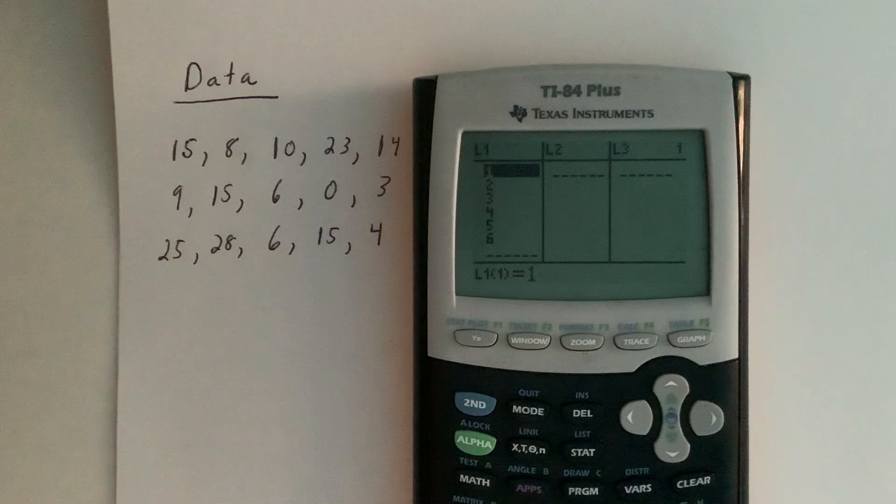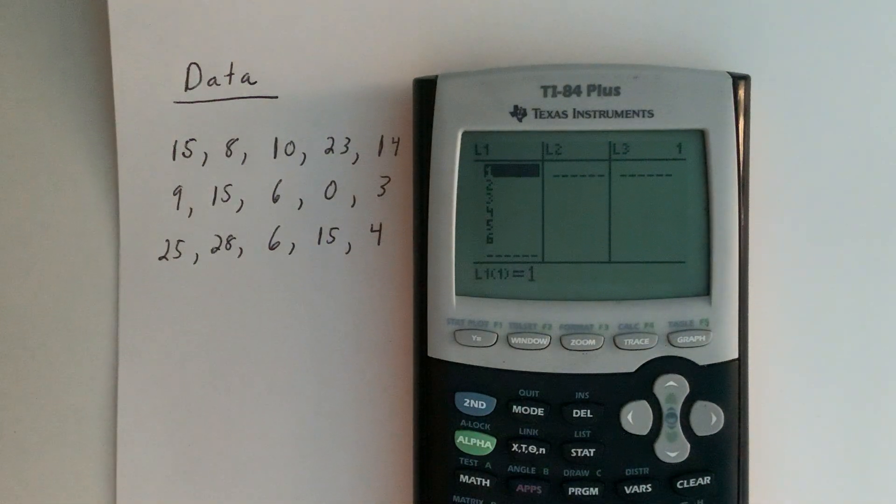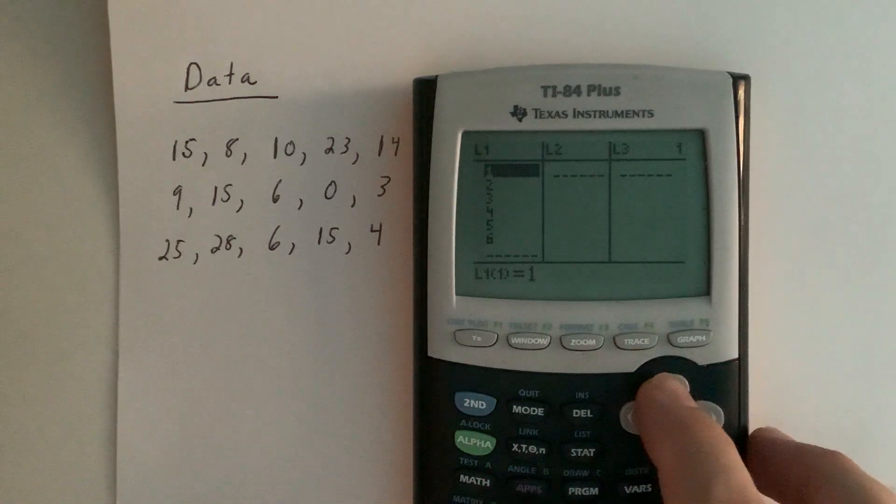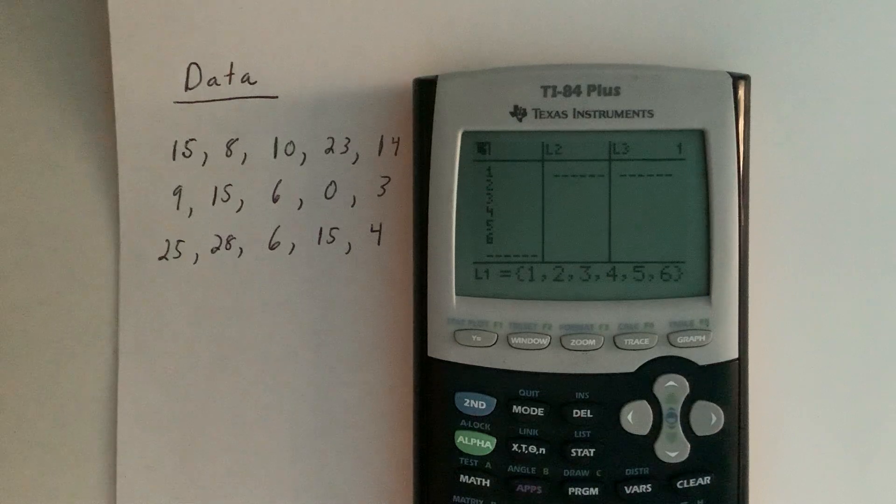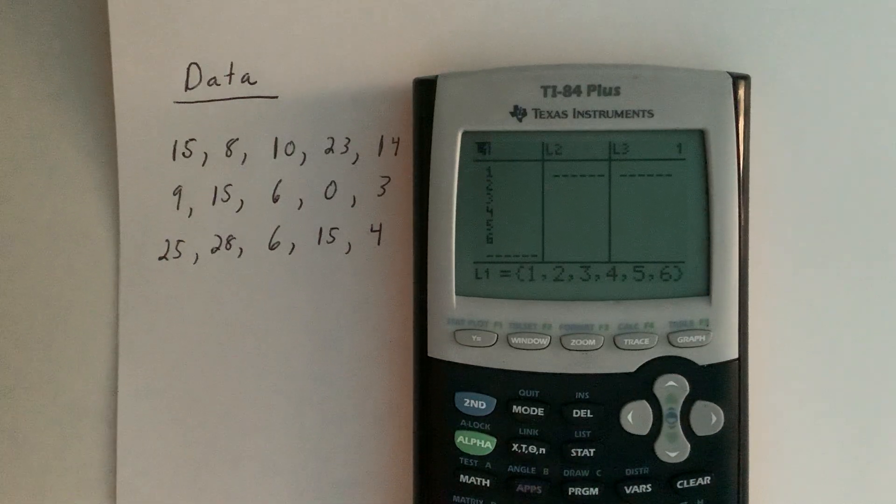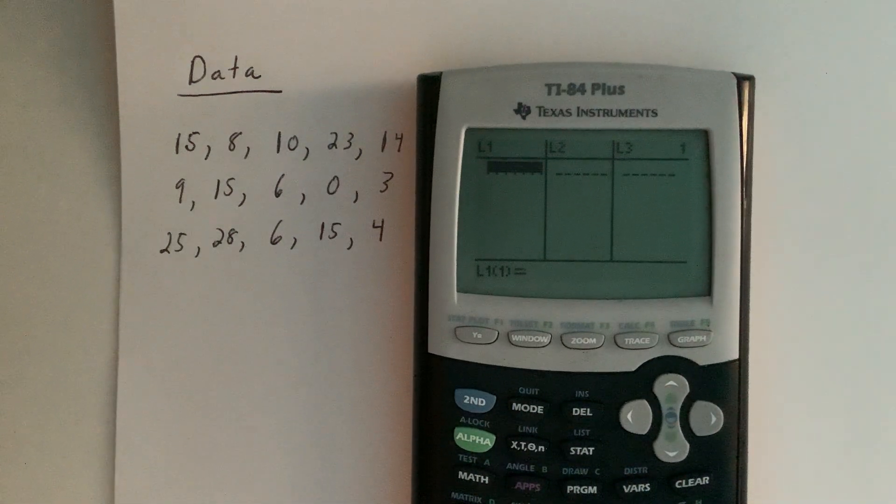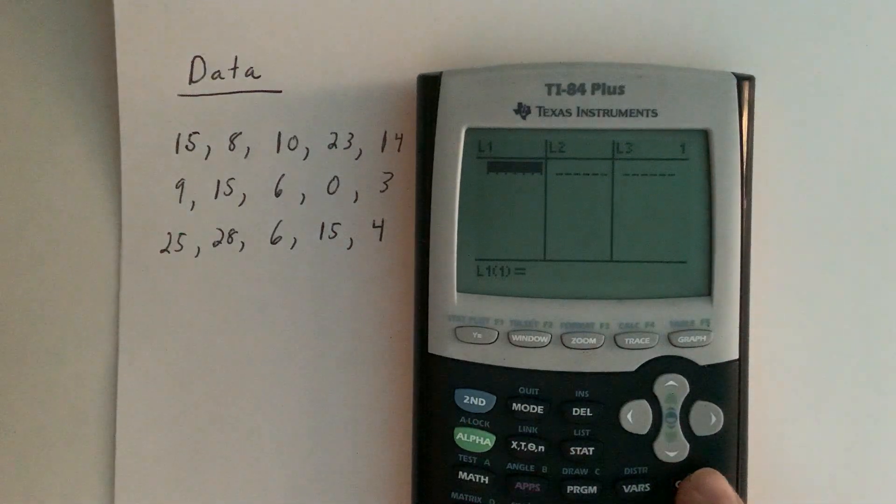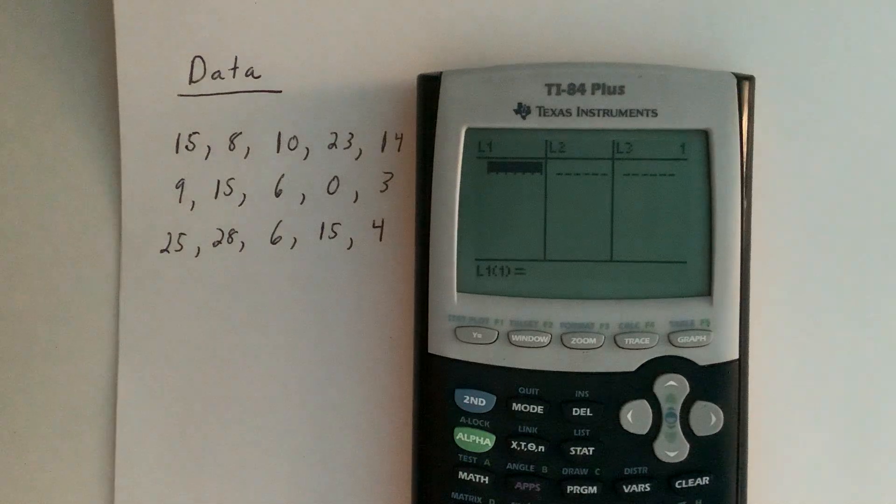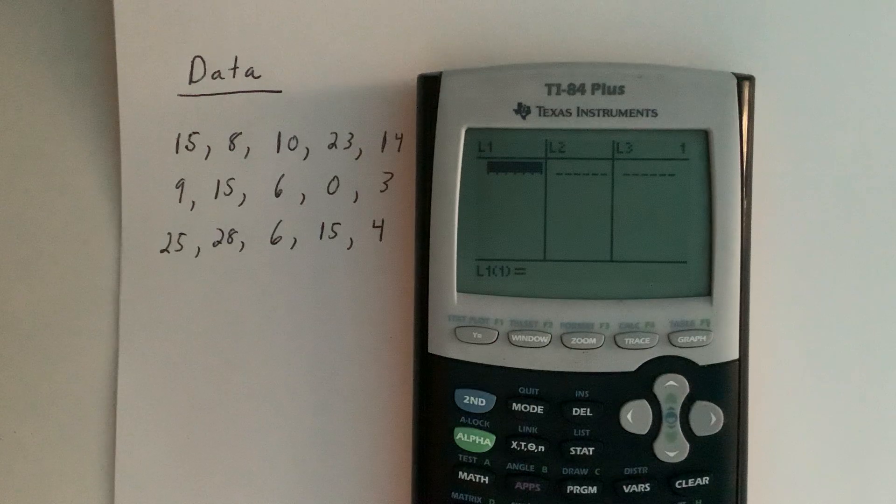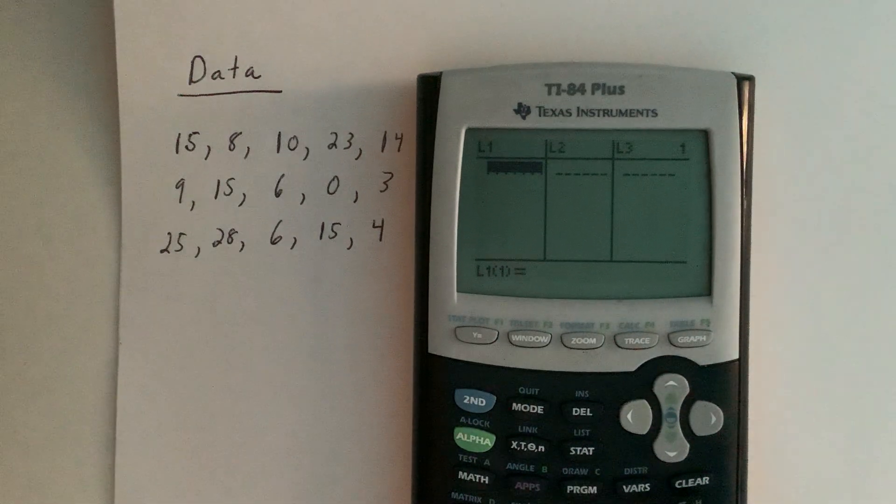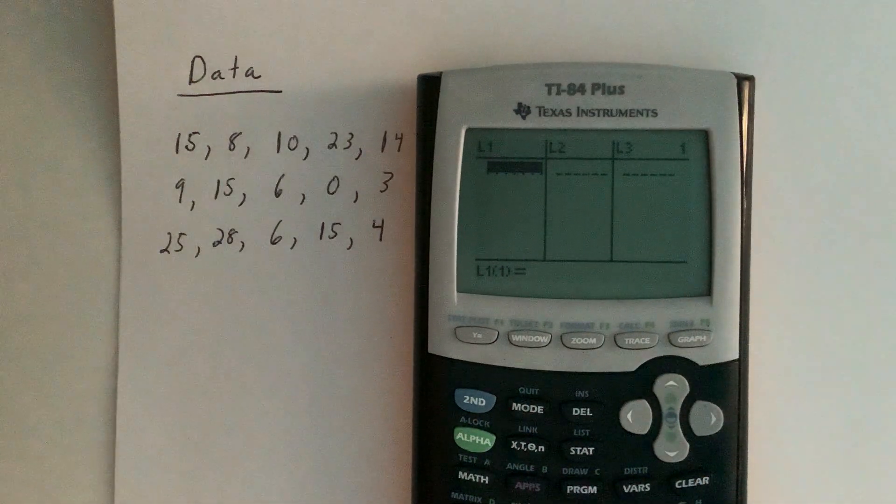If your calculator already has data in it, like mine does here, you'll probably want to clear that out before you put in the data set that we're working with. The easiest way to do this is to move your cursor up to where it is highlighted on L1, hit the clear key, which is right here, and then hit enter. The key thing to remind yourself is that we're using this clear key and not the delete key. The delete key will actually delete the list.